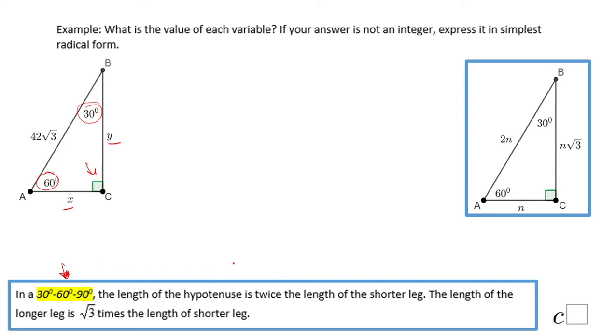We have these rules which you can see here or in this picture, and let's take a look at these patterns. So if you notice, on the opposite side of 30 degrees the leg is n. The adjacent leg to 30 degrees is n square root of 3, and the hypotenuse is 2n.